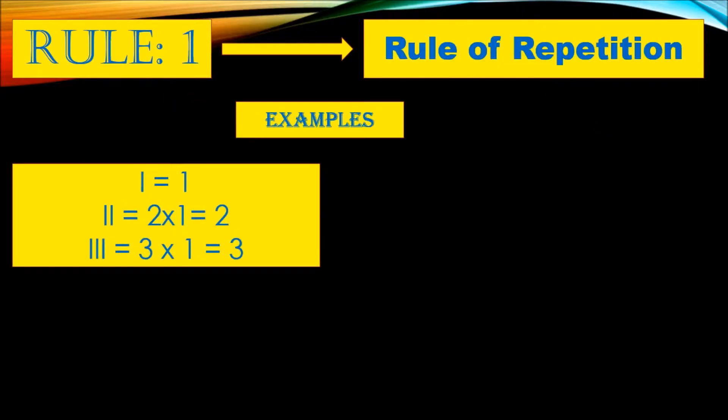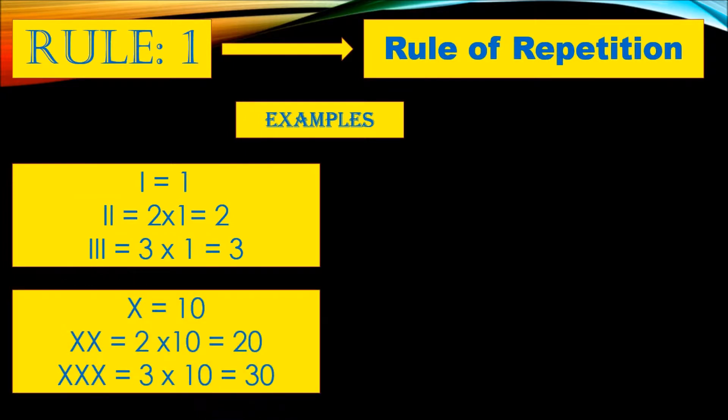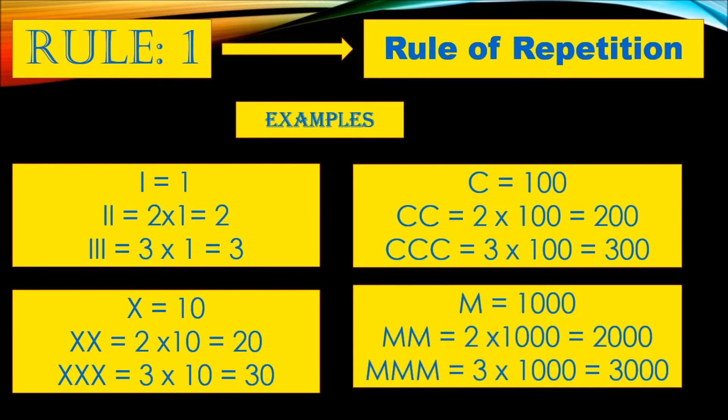I equals one. If we write two I's, that is two times one equals two. If you write three I's, that is three times one equals three. Same way with X, C, and M.